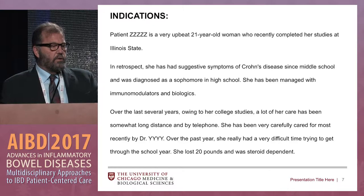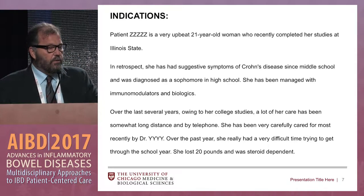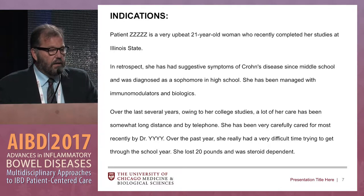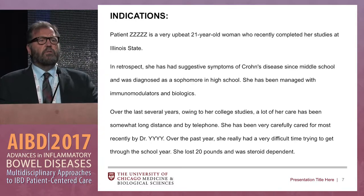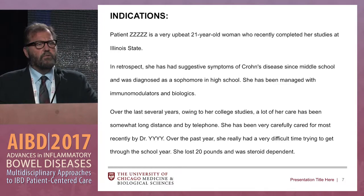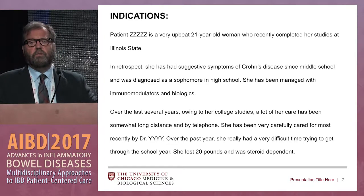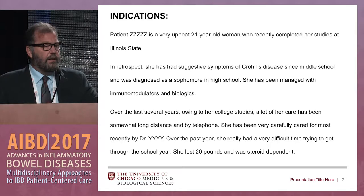Here is this patient: a very upbeat 21-year-old woman who recently completed her studies at Illinois State. In retrospect, she's had suggestive symptoms of Crohn's disease since middle school and was diagnosed as a sophomore in high school. She's been managed with immunomodulators and biologics over the last several years. A lot of her care has been long distance. She's been carefully cared for by gastroenterologist Dr. YYY — because gastroenterologists often feel that somehow they've personally not succeeded if the patient ends up with an operation. That's certainly not true. There's no institution I'm aware of where medicines work every time, and I wanted to acknowledge the gastroenterologist's effort in the operative report.